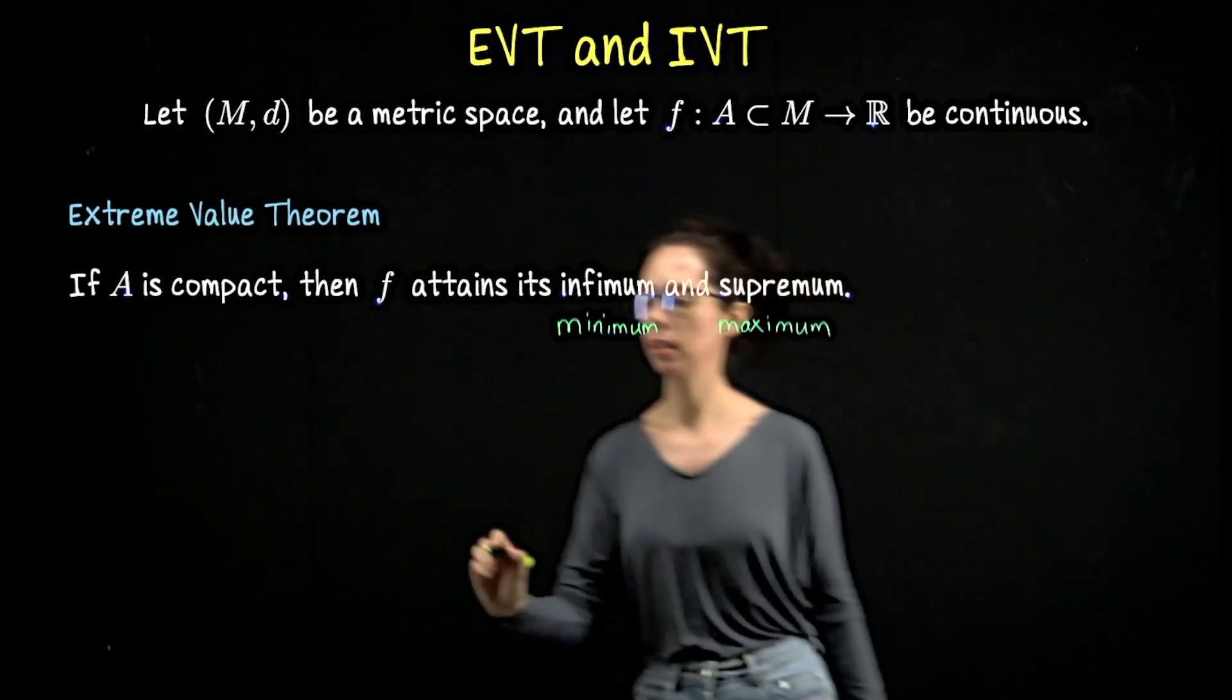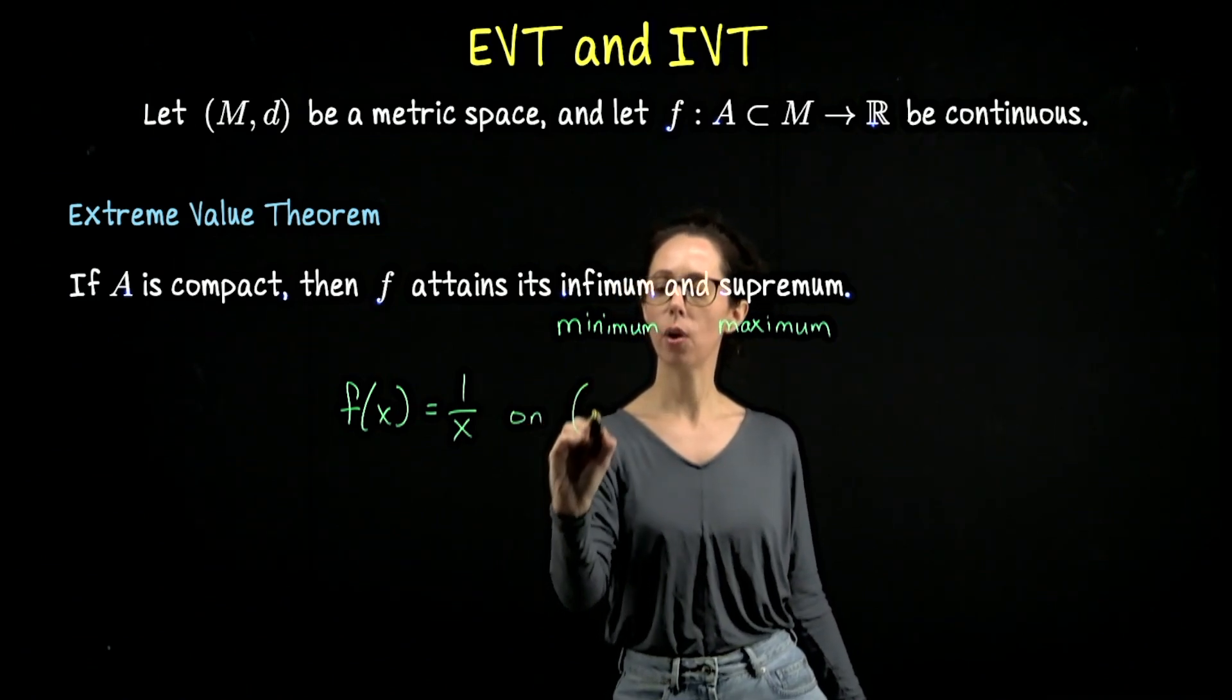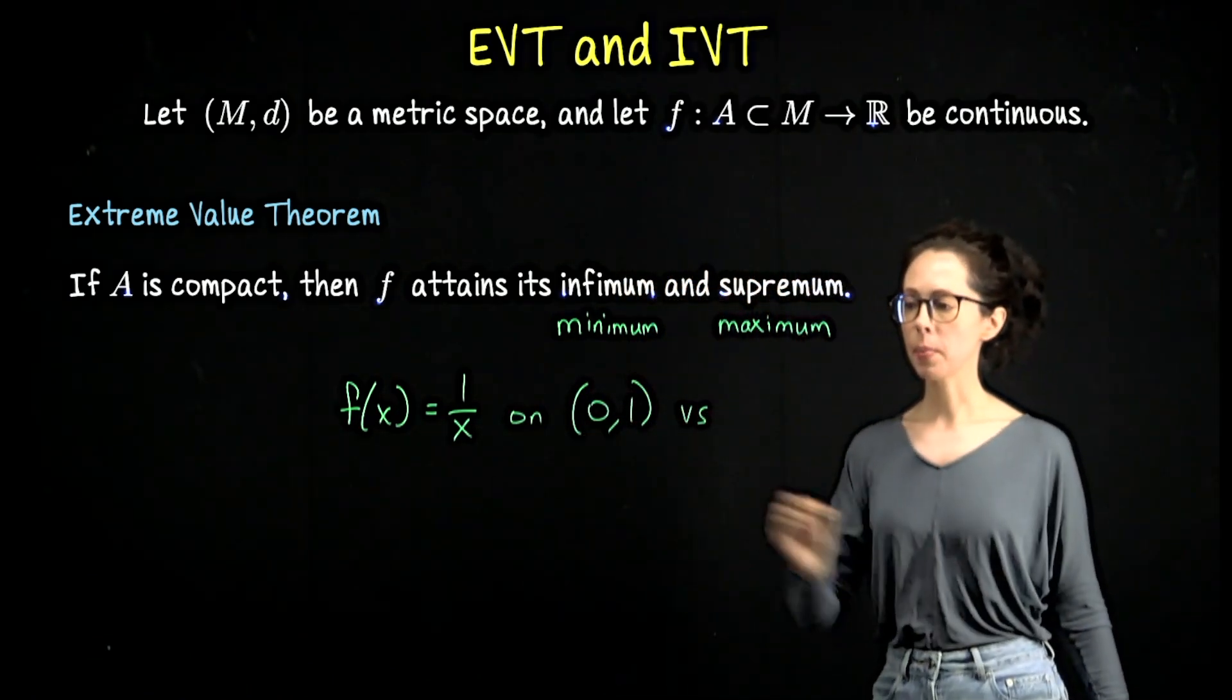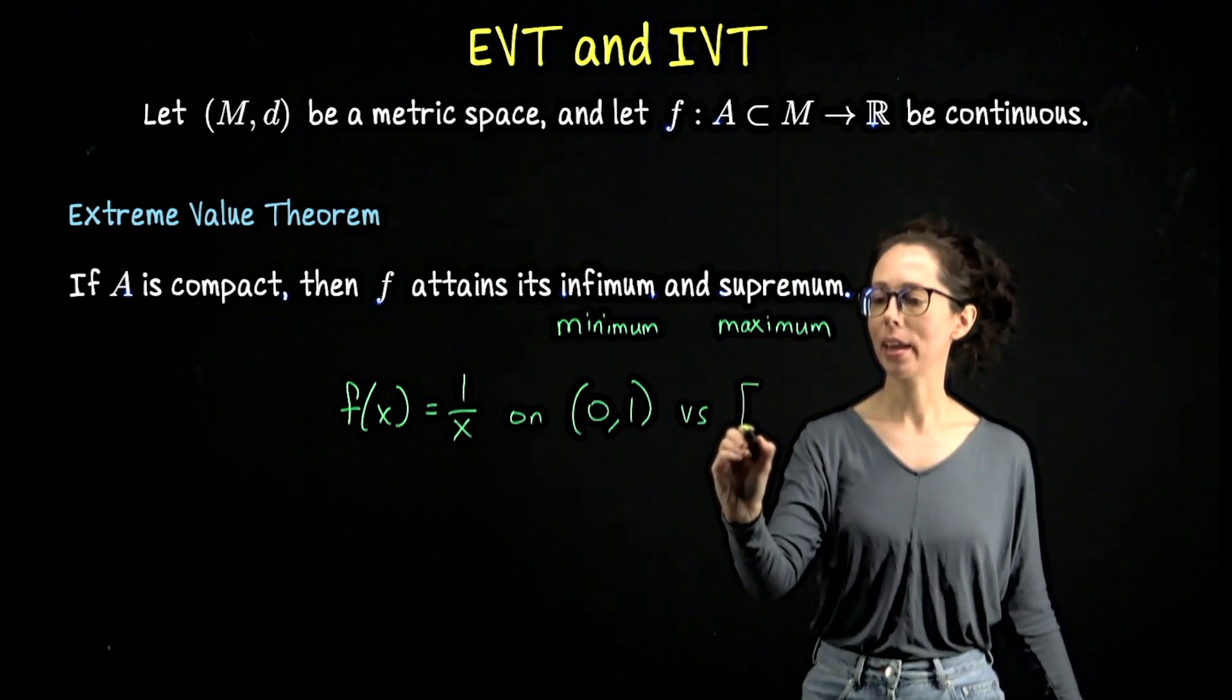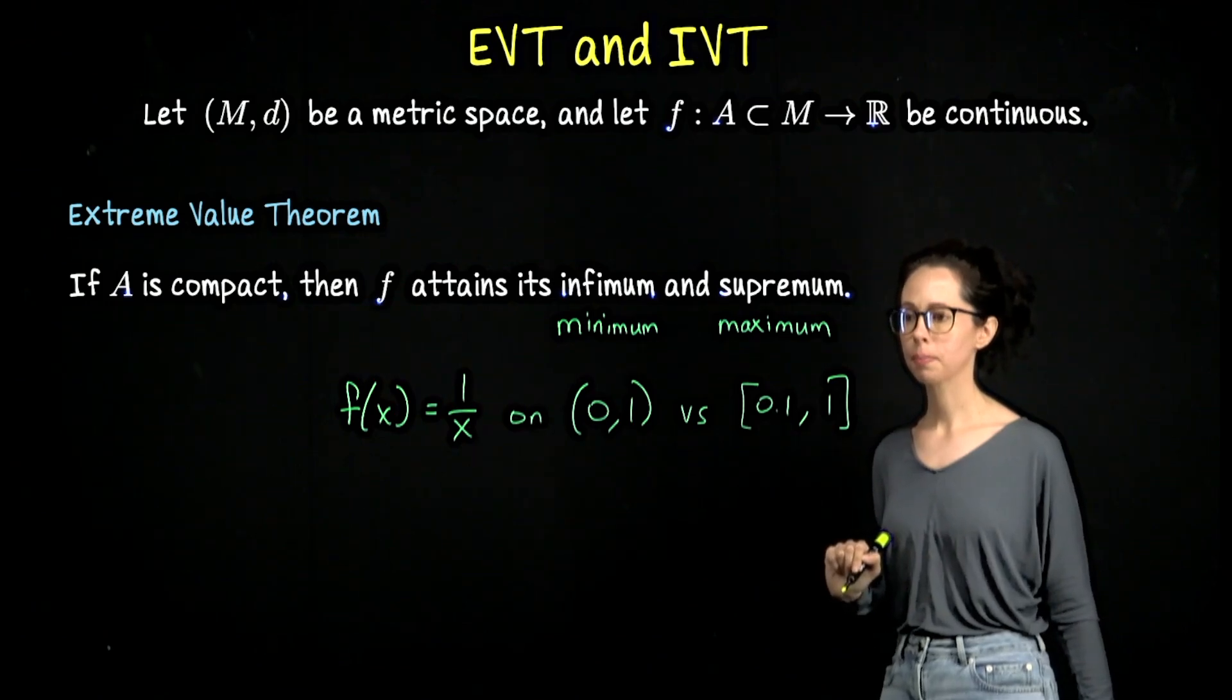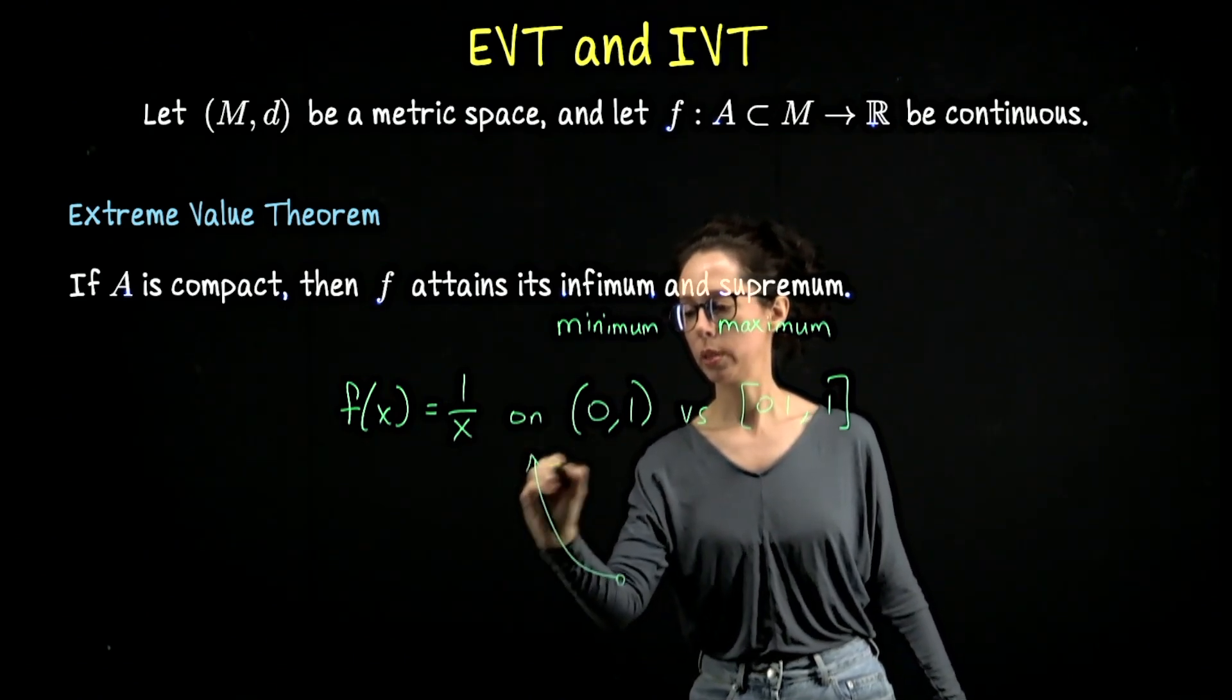Let me sketch a picture illustrating the difference. Imagine I took the function f(x) = 1/x on the open interval from 0 to 1, and then I'm going to make this compact. I can't include 0 because that's not part of any possible domain for this function, so let me say 0.1 through 1.